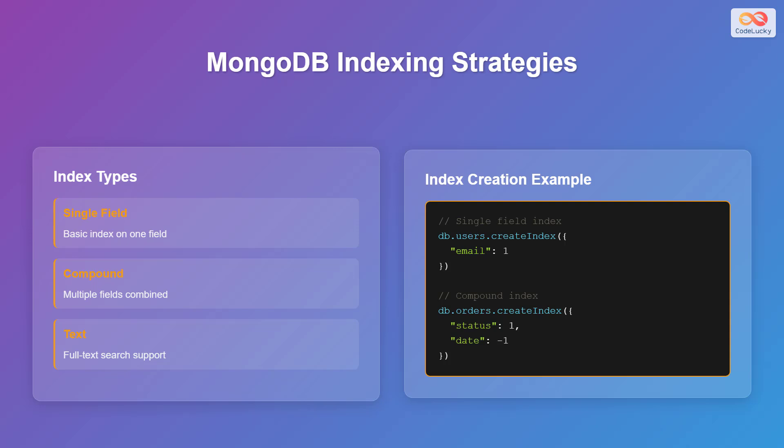To create a single-field index, use the db.users.createIndex method, specifying the field, such as email, and the indexing order, such as 1. For a compound index, use the db.orders.createIndex method, including all fields, such as status and date, and their respective orders, such as 1 or negative 1.